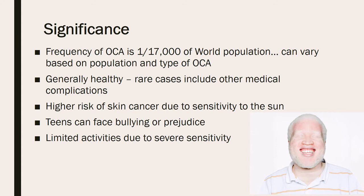There are several reasons why this genetic disorder is significant. First, albinism affects one out of 17,000 people in the world's population; however, this can vary based on different populations or geographic regions. Most people with albinism are just as healthy as unaffected people. However, some affected people may develop other medical complications, such as bleeding, bowel problems, or issues with their immune system.